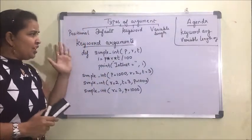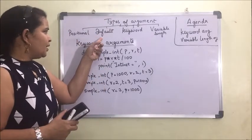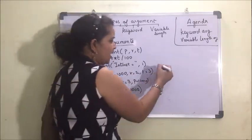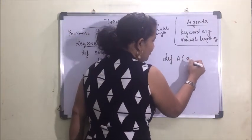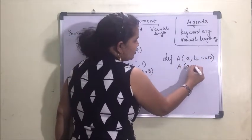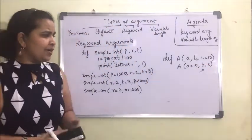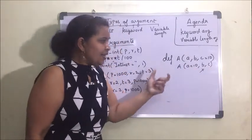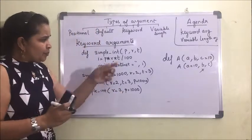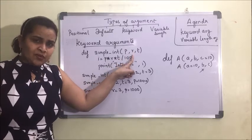Keyword arguments are used when you remember that default arguments should always be at the last position. For example, if we are defining a function and writing a=10, b, c — that is wrong; the default argument must be at the last. Secondly, position always matters. In a simple interest function, the first parameter will always be principal, r will be rate, and t will be time.